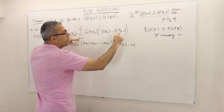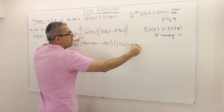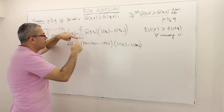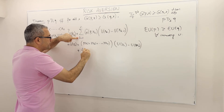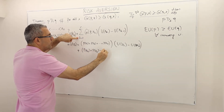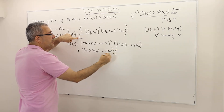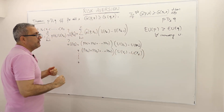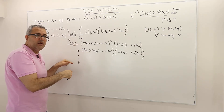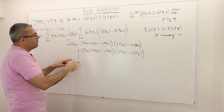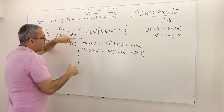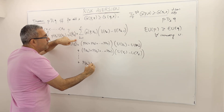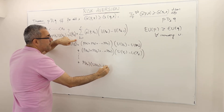I multiply this by [U(X₁) − U(X₀)]. Then for K=2, G of P(X₂) = P(X₂) + P(X₃) + ... + P(X_N), multiplied by [U(X₂) − U(X₁)]. You get the idea. This continues all the way to K=N, where G of P(X_N) = P(X_N), multiplied by [U(X_N) − U(X_{N−1})].